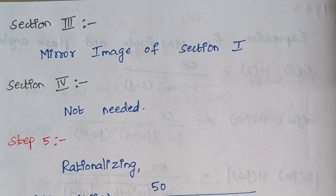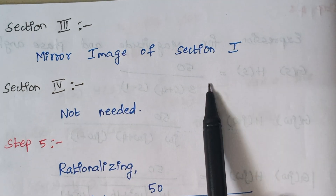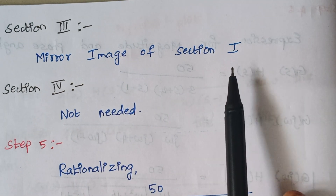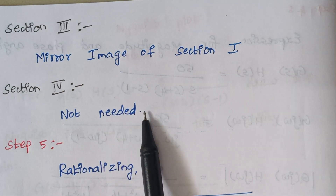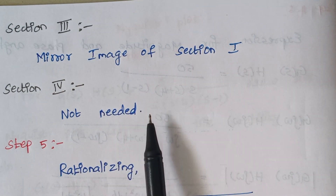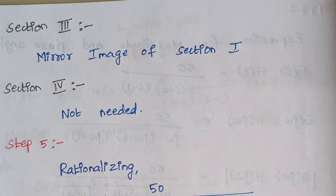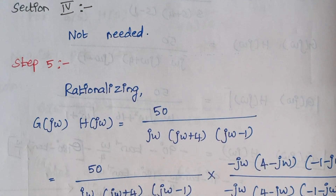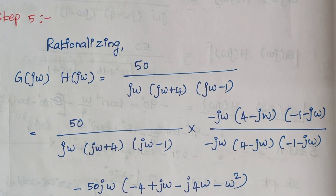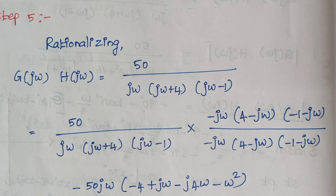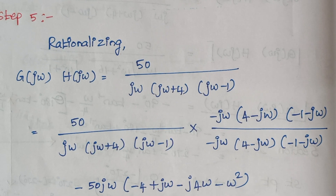Section 3 is nothing but the mirror image of section 1, and section 4 analysis is not needed. Step 5 is rationalizing — taking the complex conjugate of the denominator terms.